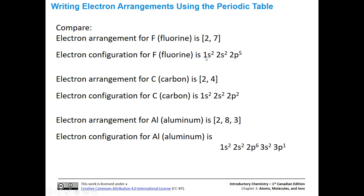Here's the electron configuration that corresponds with it — two electrons in the n=1 shell, and seven electrons in the n=2 shell, both the s's and p's. For carbon, the inner shell is 1s2, and all the electrons in the n=2 level: two in the s and another two in the p, giving us the arrangement 2, 4.